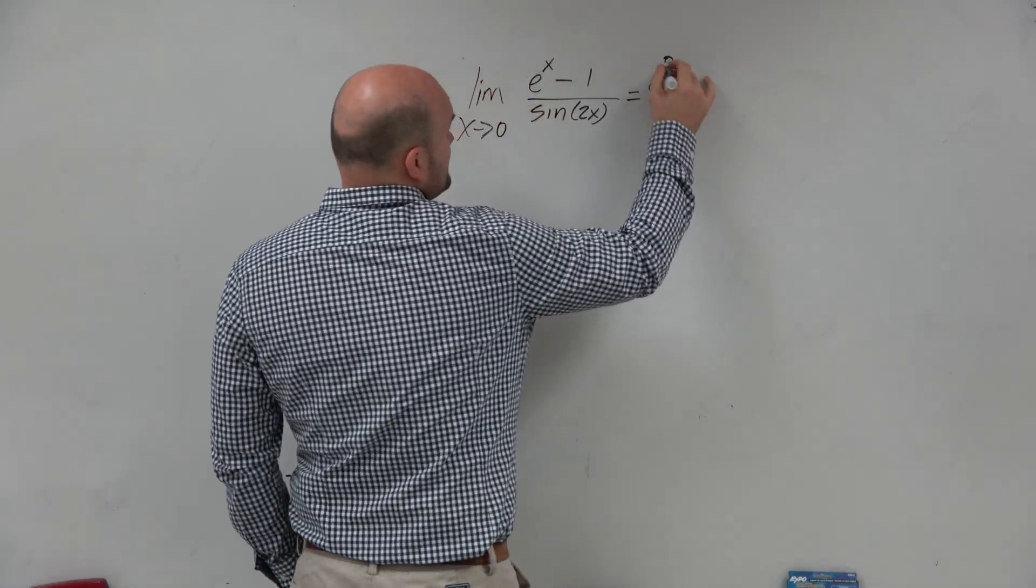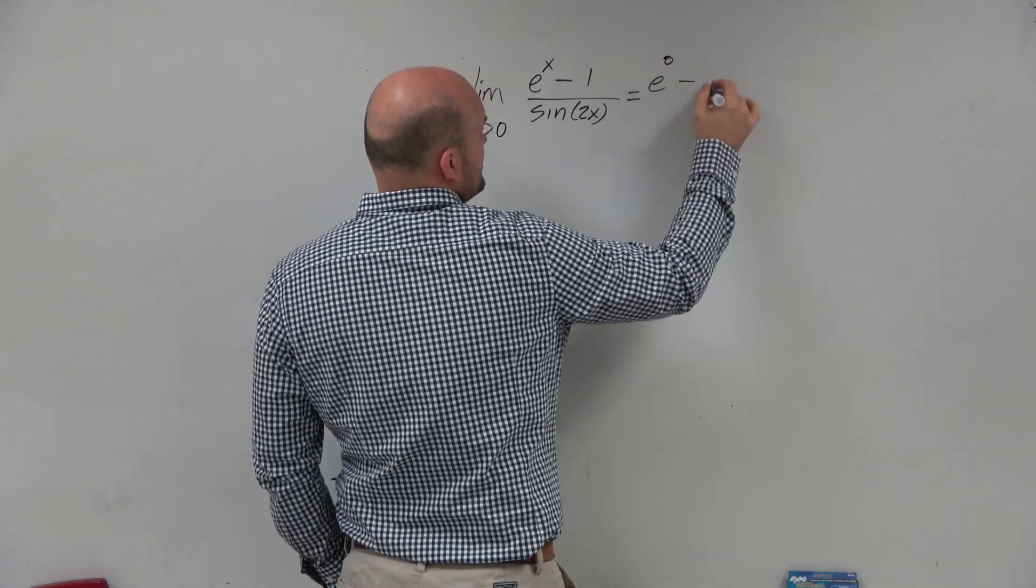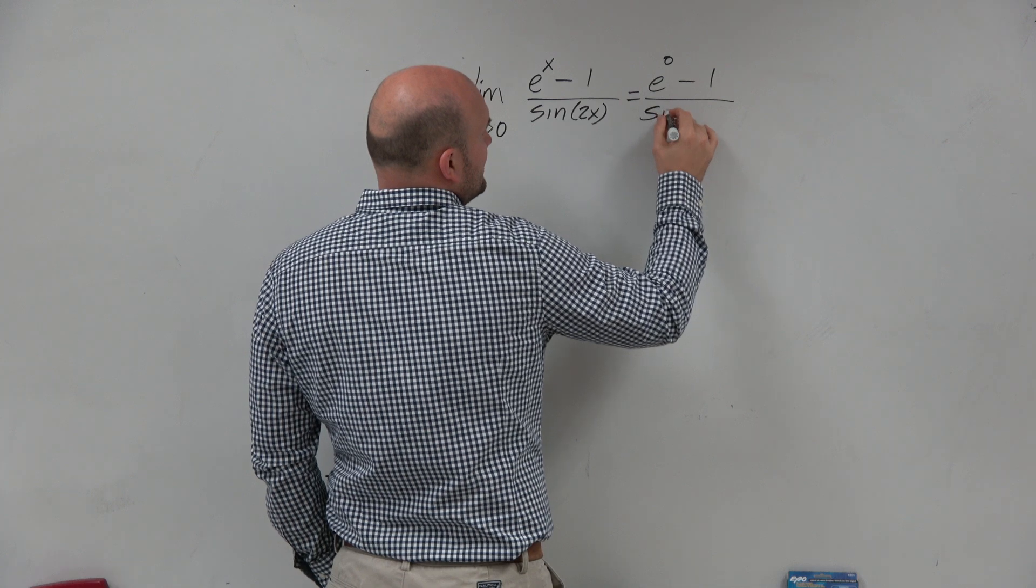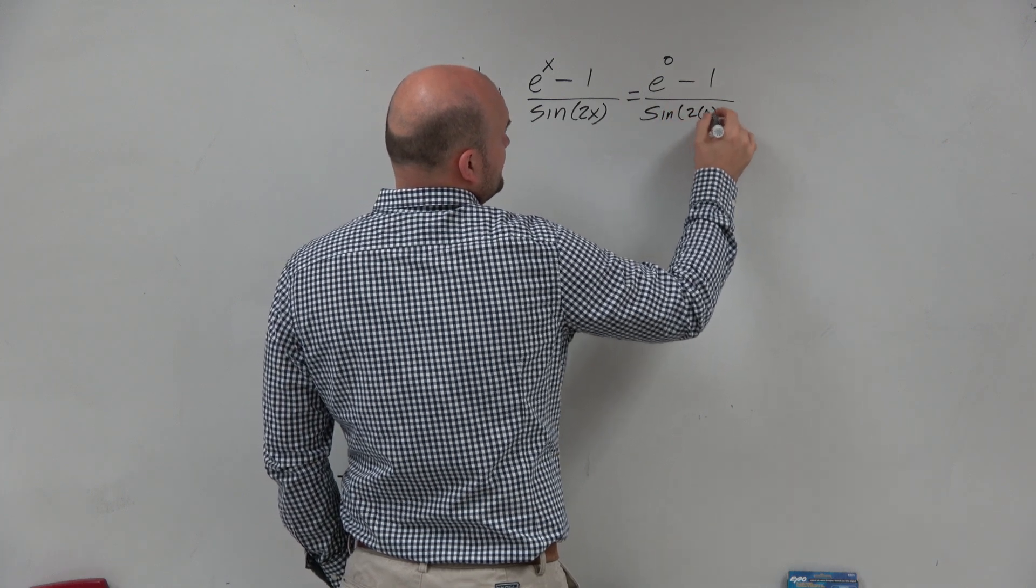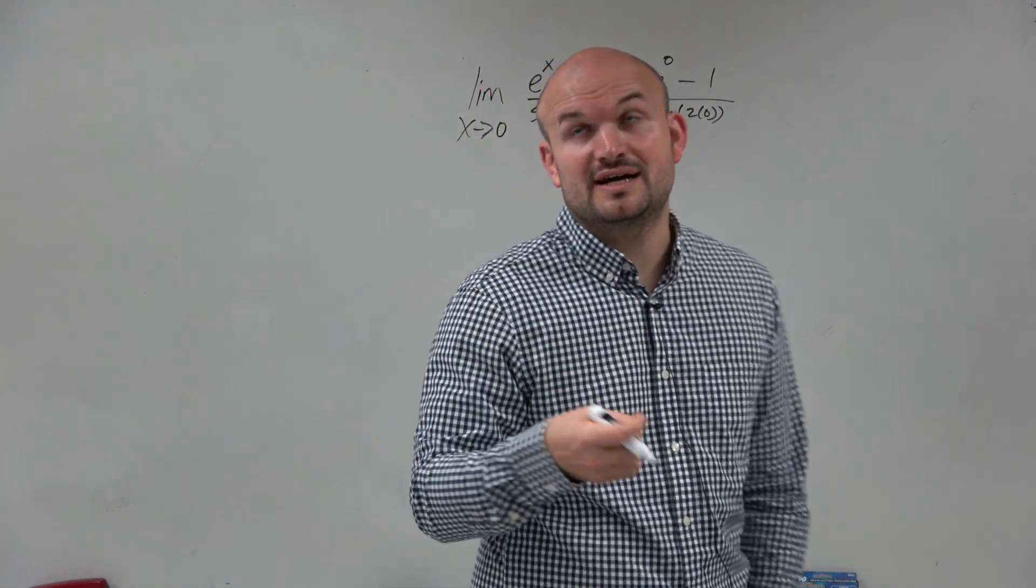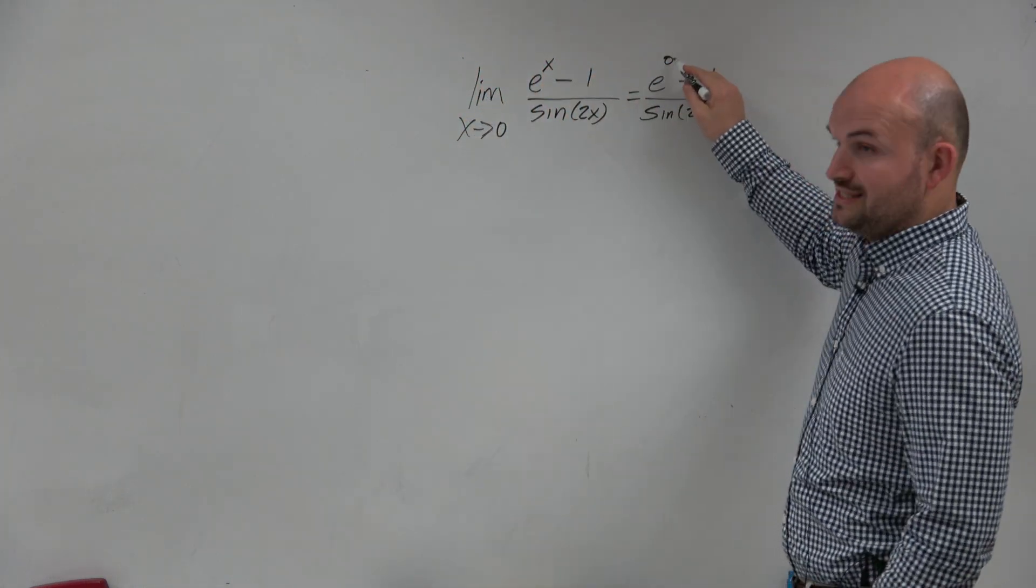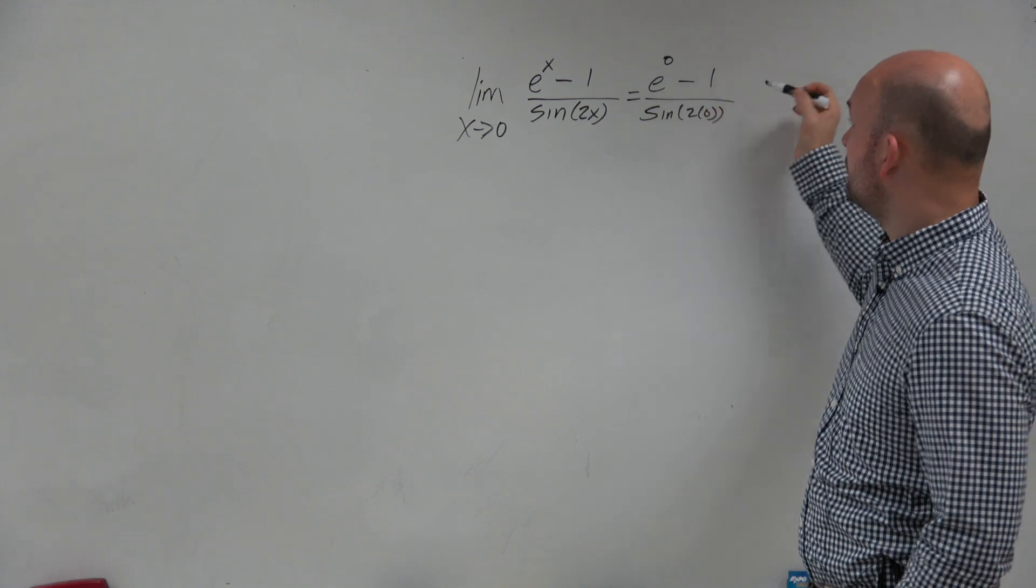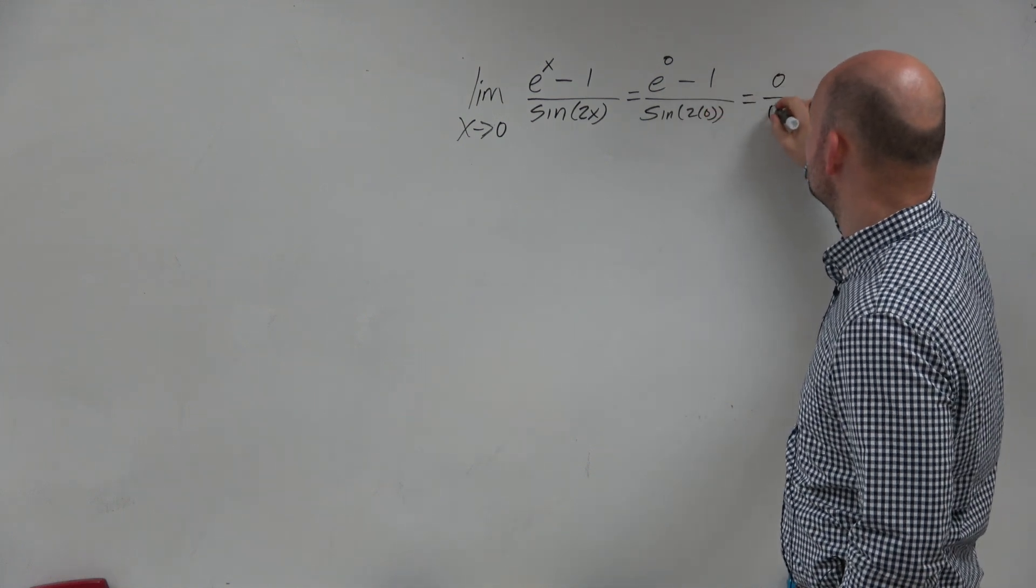When we apply direct substitution, we get e to the 0 minus 1 over sine of 2 times 0. Well, obviously, sine of 2 times 0 is just 0. Sine of 0, we look at the unit circle, that's going to be 0. e to the 0 is 1. 1 minus 1 is 0 over 0.